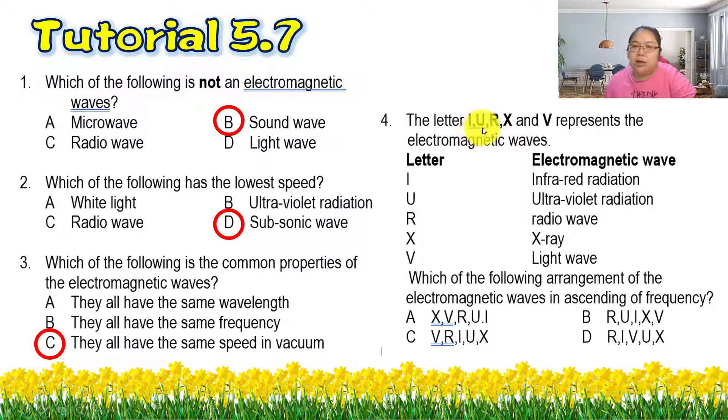Number four, they give you the letters I, U, R, X, V. So from here we need to check which one is the correct arrangement of electromagnetic waves in ascending frequency. That means from the smallest to the largest. The smallest I find is radio wave, that's R, so that means my answer is either B or D.